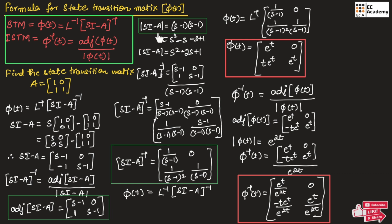To find the determinant of (SI - A), we compute (S-1)(S-1) minus 0 times (-1), which gives (S-1)(S-1). This is the determinant of (SI - A). Once we have the adjoint and determinant of (SI - A), we divide these two to get (SI - A) inverse.